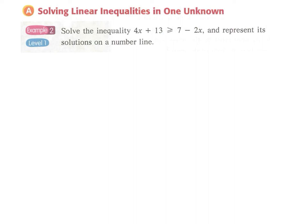Next we come to a section on solving linear inequalities in one unknown. In this example, solve the inequality 4x plus 13 greater than or equal to 7 minus 2x, and represent its solution on the number line. We have 4x plus 13 on the left hand side and 7 minus 2x on the right hand side. Since we have minus 2x and plus 4x, we either have to move 4x to the right hand side or move minus 2x to the left hand side.